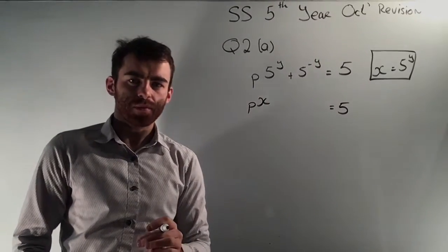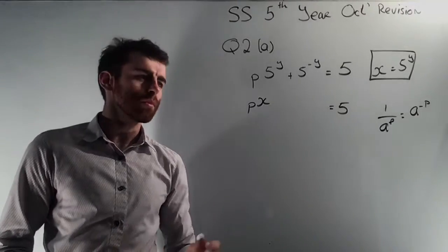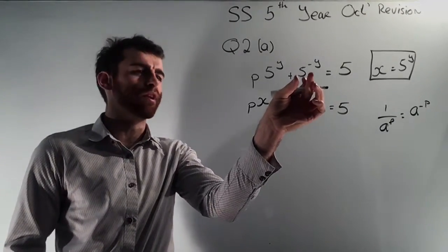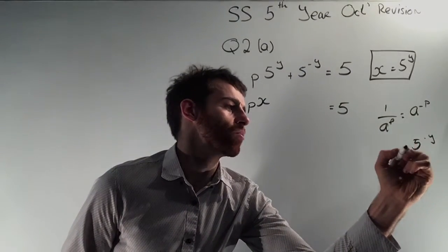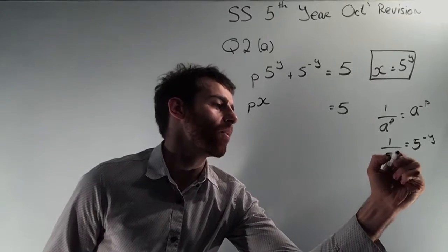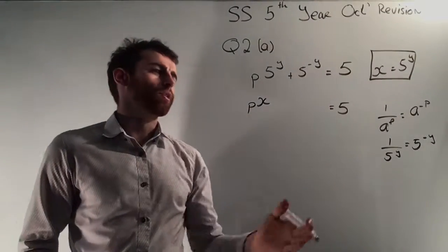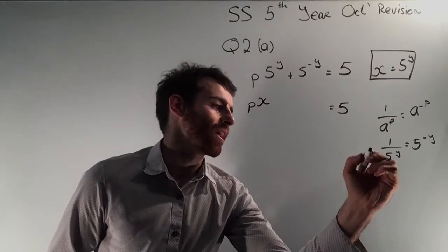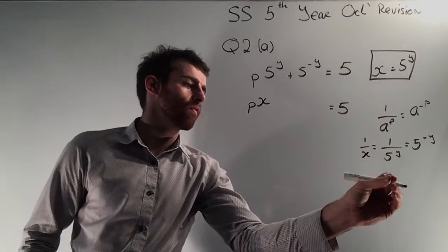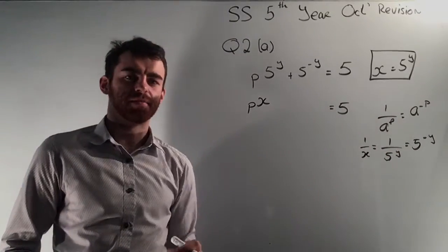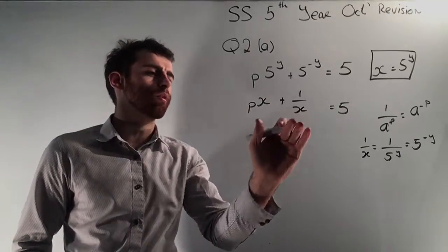I have 5 to the power of minus y. One of your rules of powers says that 1 over a to the power of p equals a to the power of minus p. With that in mind, I can use that rule to get rid of my negative power. If I have 5 to the power of minus y, that's like the right-hand side of this formula. So 5 to the power of minus y is the same as 1 over 5 to the power of y. Now I've gotten rid of the negative power. Looking at the substitution, instead of 5 to the power of y I can put in x, so this actually just becomes 1 over x. So 5 to the power of minus y equals 1 over 5 to the power of y, which equals 1 over x.